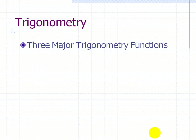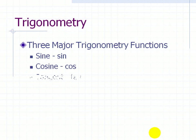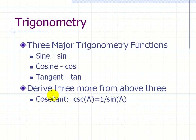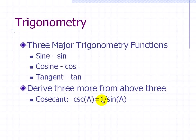Earlier, we defined three major trigonometric functions: the sine, the cosine, and the tangent. We can define and derive three more based on the above definitions. The cosecant, or CSC, of A is just the reciprocal — one over the sine of A.